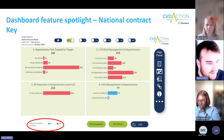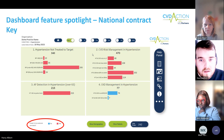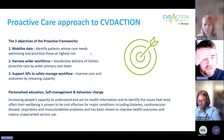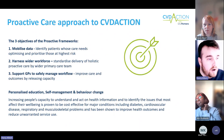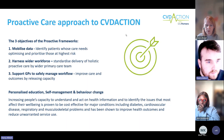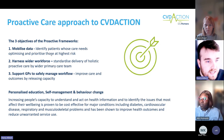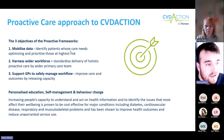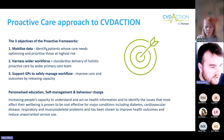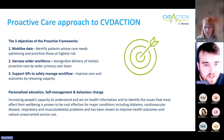Moving on to a quick summary of the proactive care approach and how we might apply that to CVD action. The three objectives of the proactive care frameworks: first is to mobilize data — identifying patients whose care needs optimizing and prioritizing those at highest risk. That should ring true to the work you're doing with CVD action. We have the dashboard which combines all of those indicators to find the highest risk patients across several conditions.